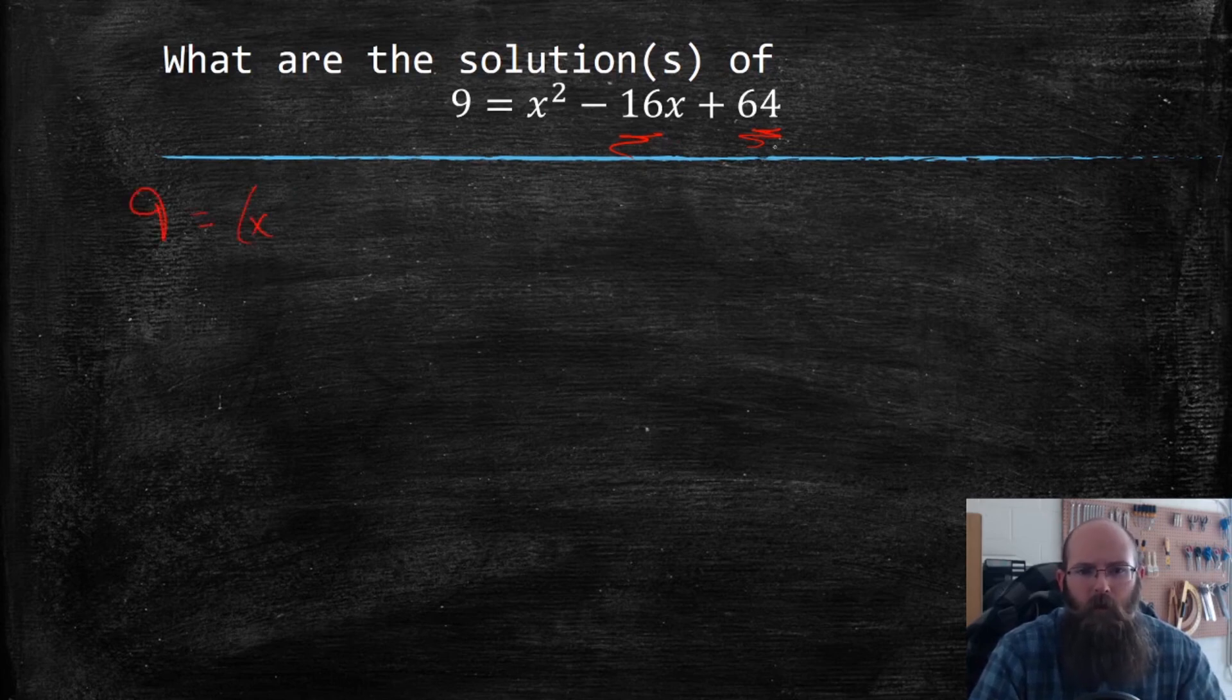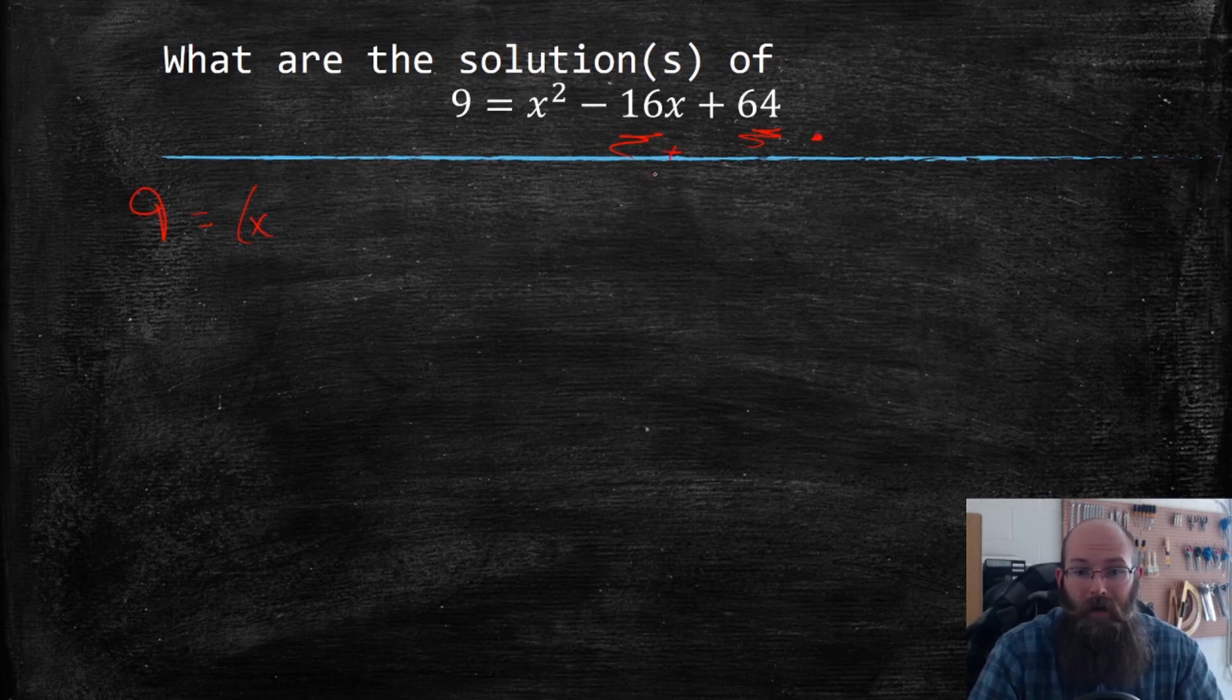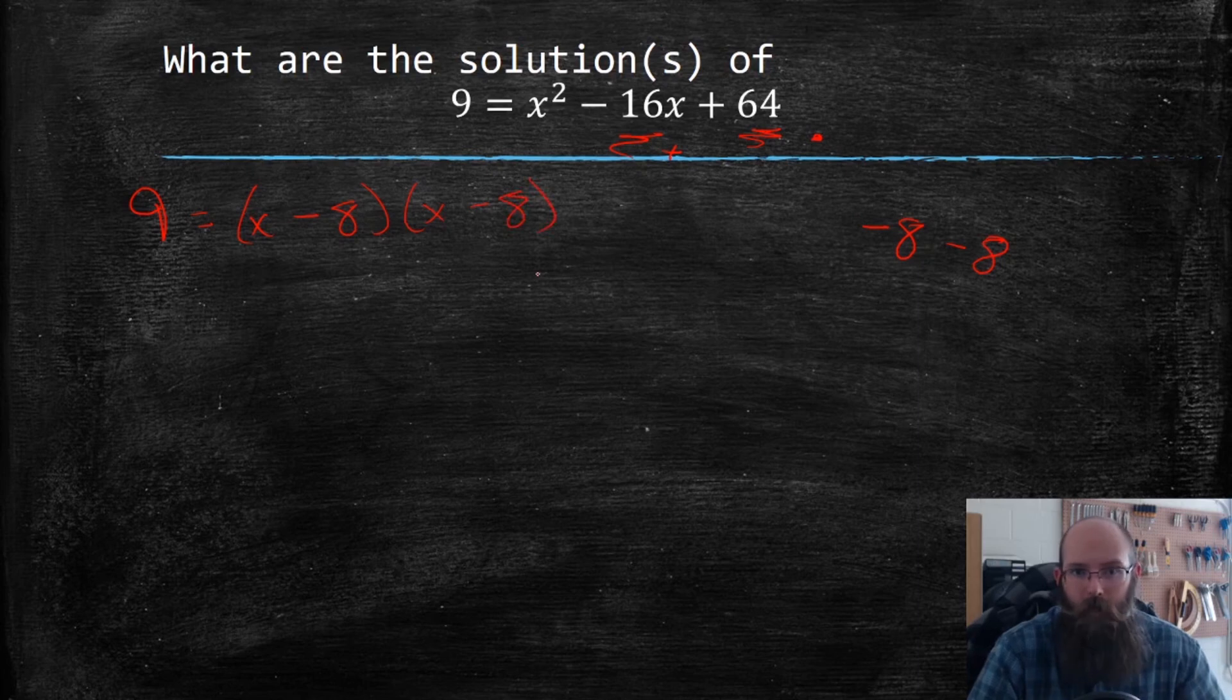So what multiplies to give me the 64, what adds to give me a negative 16? Well, negative eight and negative eight are going to make that happen for both of those things. So I actually have this, this one's already factorable from the get go. So I'm going to simplify this a little bit more.